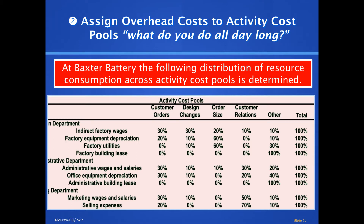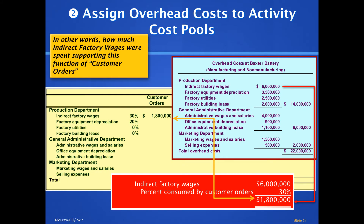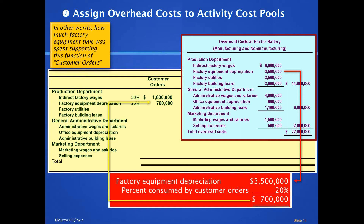The indirect factory wages from the production department totaled six million dollars. The first stage asks: what percentage of the day is spent on each activity? The supervisor said 30% on customer orders, so 30% of that six million dollars gets allocated to the customer order bucket. We go down the list the same way for every cost.